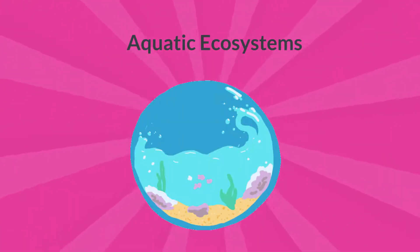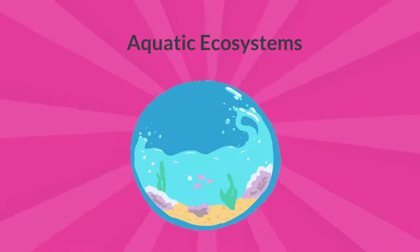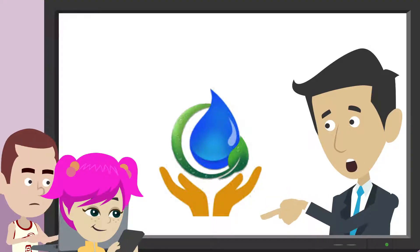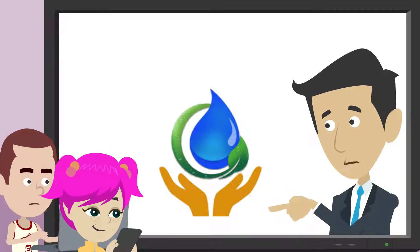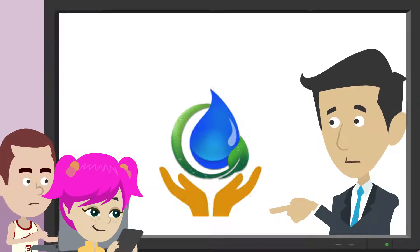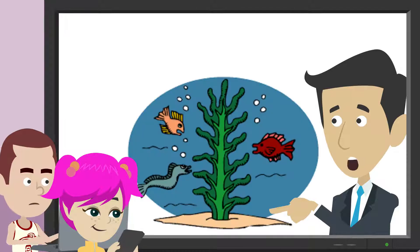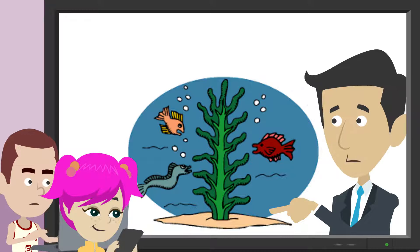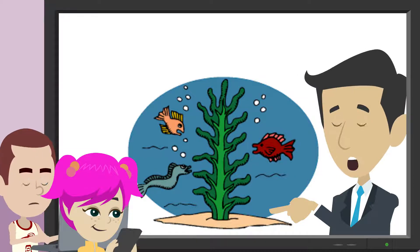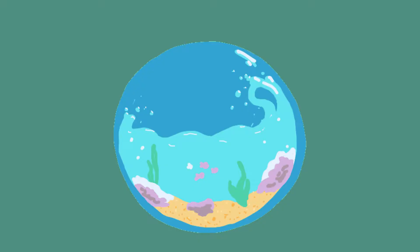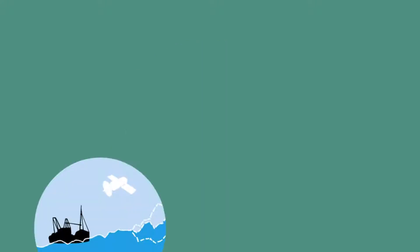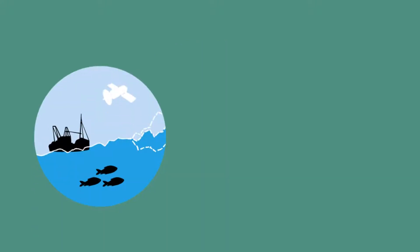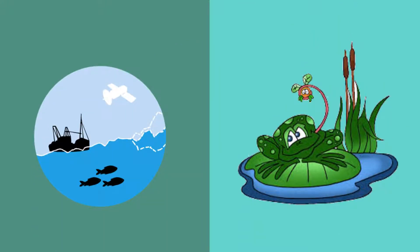Aquatic Ecosystems. An aquatic ecosystem includes any water-based environment. Among them, the chemical and physical characteristics of animals and plants interact with the aquatic environment. Aquatic ecosystems are generally divided into two types: marine ecosystem and freshwater ecosystem.